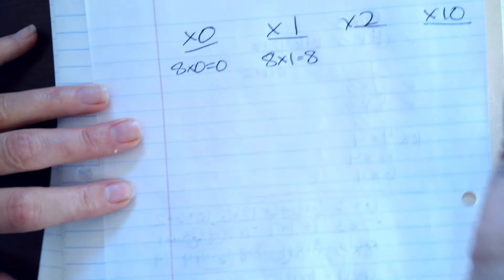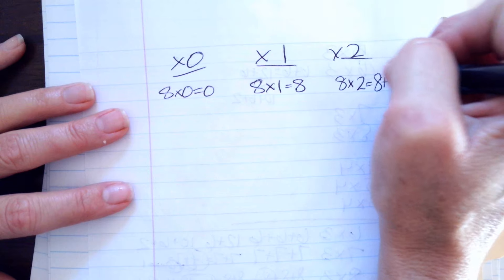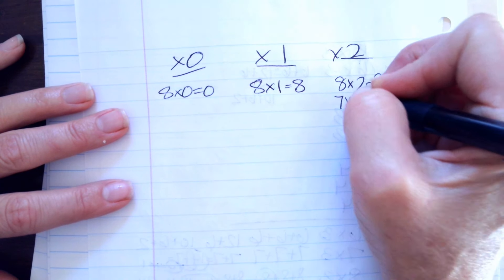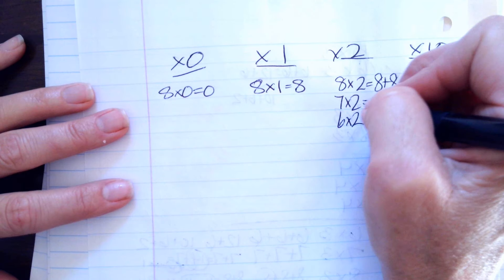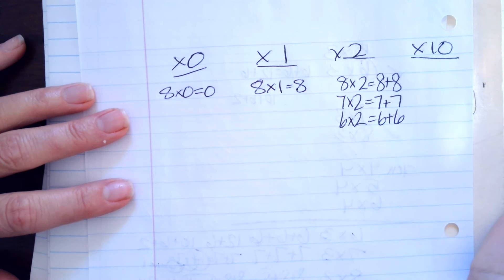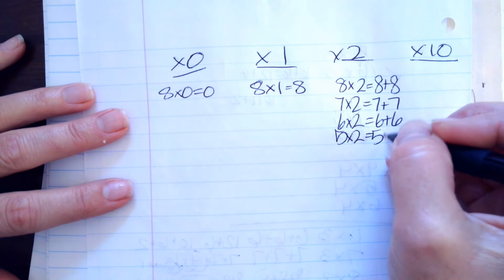And then anything times 2 is the same as 8 plus 8. 7 times 2 is the same as 7 plus 7. 6 times 2 is the same as 6 plus 6. 5 times 2 is the same as 5 plus 5.